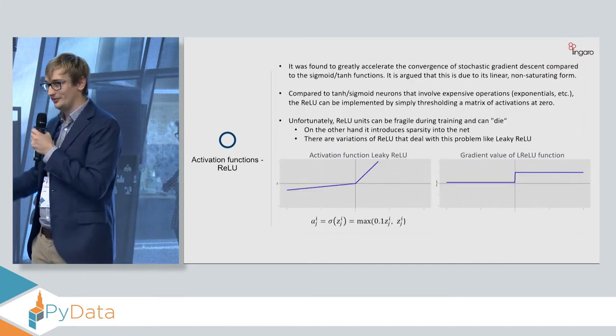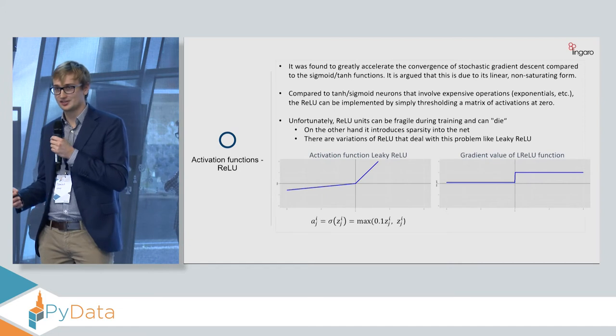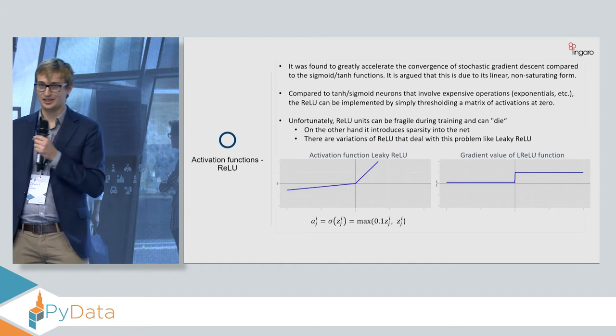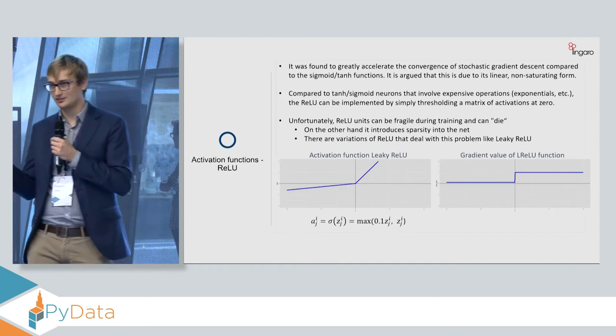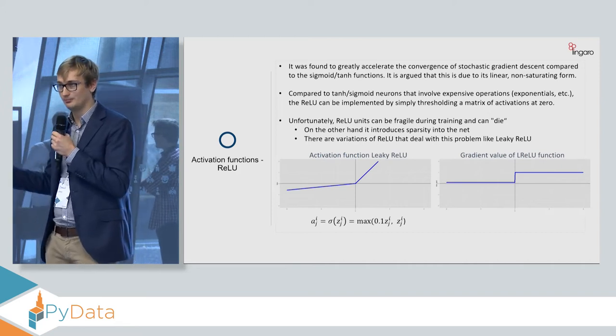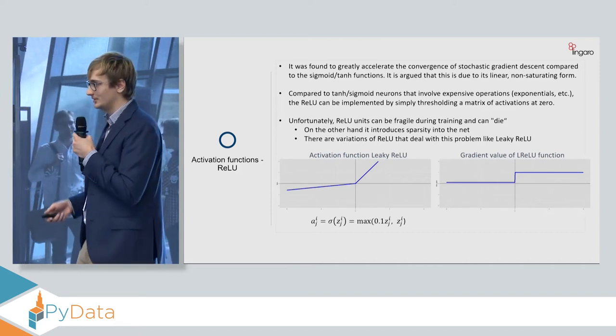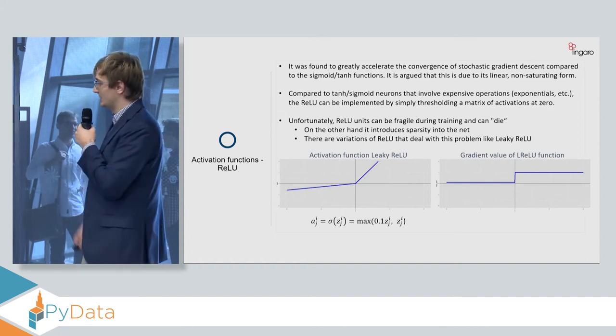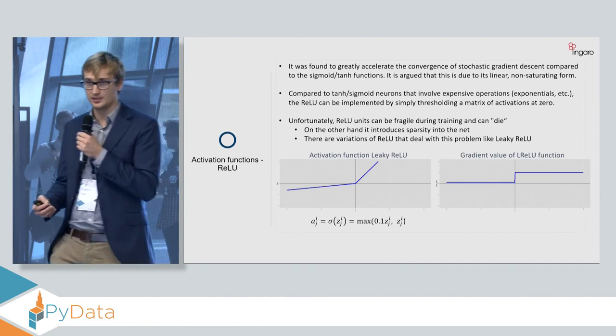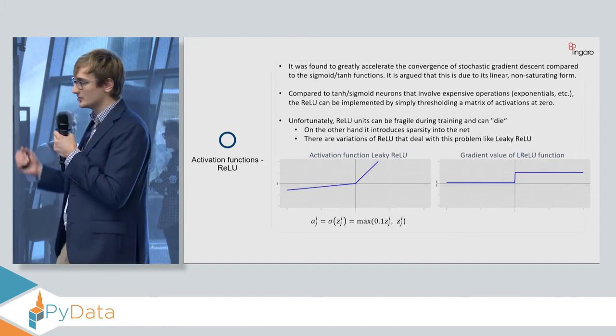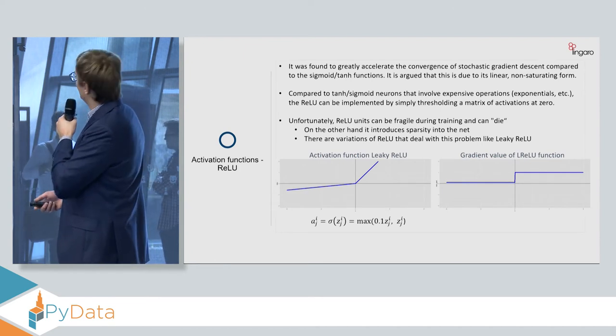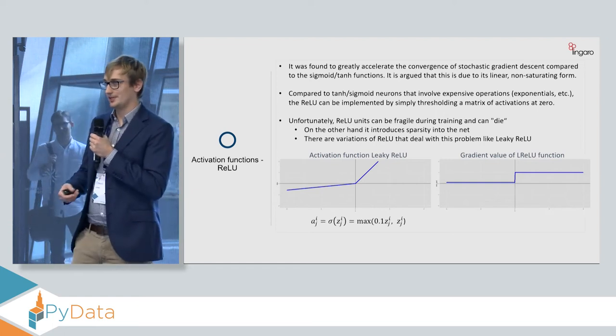Previously, using the other functions, I elaborated a lot about theoretical reasons. Why is it like that? And we could derive this from equations. In case of this function, it's more like experimental results tell us that it's actually much better. It performs better. So for example, the convergence. So the time we need to achieve a good result, a high accuracy, is lower for this function versus the functions that I described previously. It's also less computationally expensive, because previously we had to calculate some complex functions and now we simply threshold the matrix at zero.